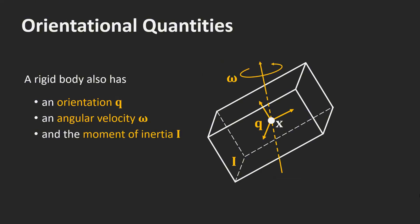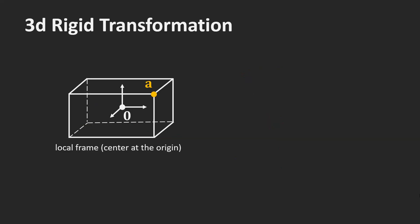In addition to position and linear velocity, a rigid body possesses three key properties: an orientation q, an angular velocity omega and the moment of inertia i. Let's examine each of these quantities individually.